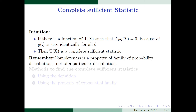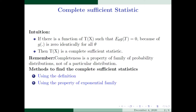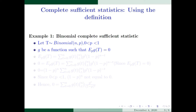One important thing is that completeness is a property of the family of probability distributions, not of a particular distribution. There are mainly two methods to find complete sufficient statistics: the first method is based on the definition, and the second is based on the property of exponential family distributions. Now I am going to discuss examples of how to find these complete sufficient statistics using the definition.